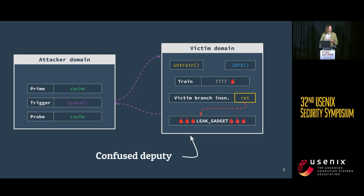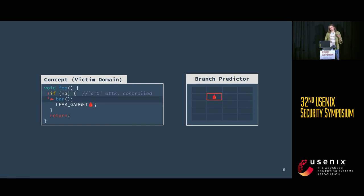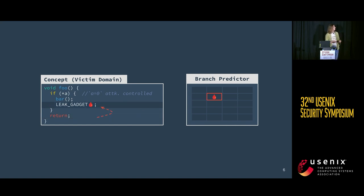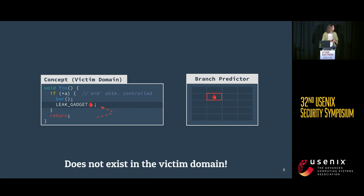How are we going to train this victim branch that has now turned into a return? We are going to use transient execution to train it. Conceptually, imagine the attacker can control the direction of a conditional branch, allowing them to make a transient call to a function bar, which adds a return prediction to the return stack. However, this exact example doesn't really work — it's more complicated, and this would just be a common Spectre variant one gadget, which we don't expect to find in the victim domain.